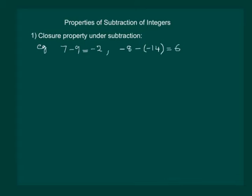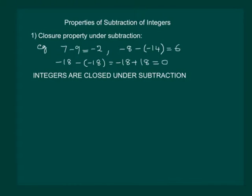What about minus 18 minus of minus 18? This is equal to minus 18 plus 18, which is equal to 0, which is also an integer. So we can say integers are closed under subtraction.